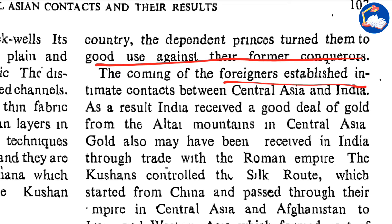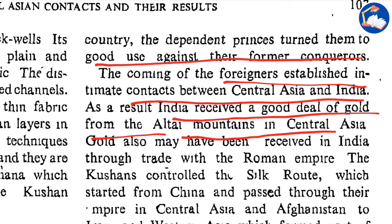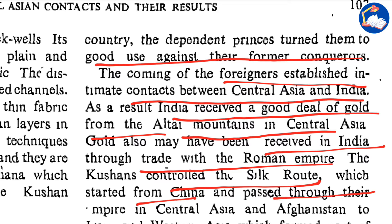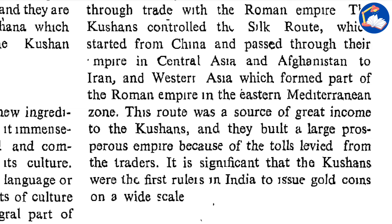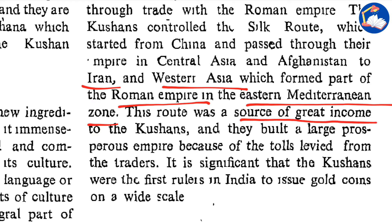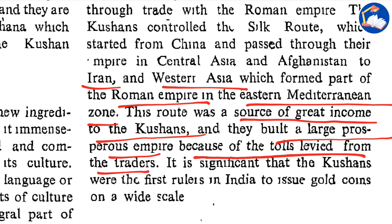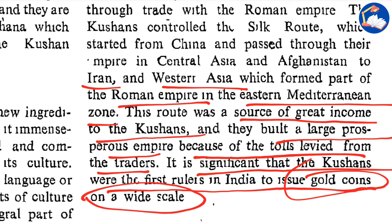The coming of the foreigners established intimate contacts between Central Asia and India. As a result, India received a good deal of gold from the Altai Mountains in Central Asia. Gold may also have been received in India through trade with the Roman Empire. The Kushans controlled the Silk Route which started from China and passed through their empire in Central Asia and Afghanistan to Iran and Western Asia, which formed part of the Roman Empire and the Eastern Mediterranean zone. This route was a source of great income to the Kushans, and they built a large prosperous empire from the tolls levied from traders.